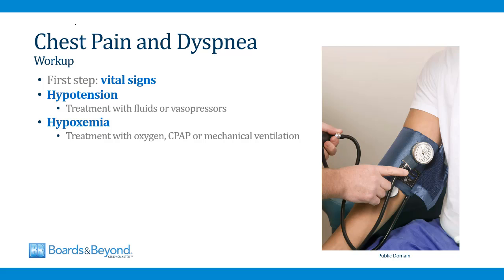The first step in evaluating any patient with chest pain and dyspnea is to assess the vital signs, because you need to know if the patient is hypotensive or hypoxemic. If the patient has hypotension, they may need urgent treatment with intravenous fluids or vasopressors. If the patient has hypoxemia, they may need oxygen, positive pressure ventilation, or mechanical ventilation.